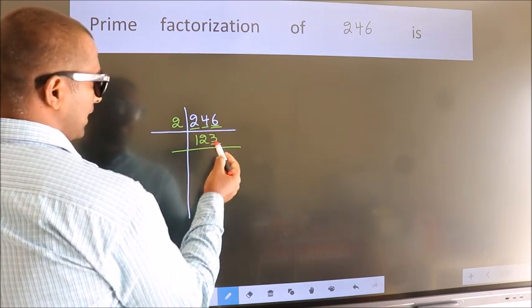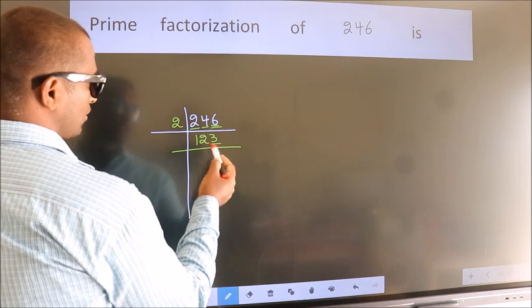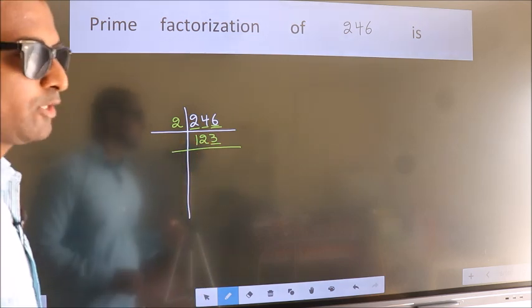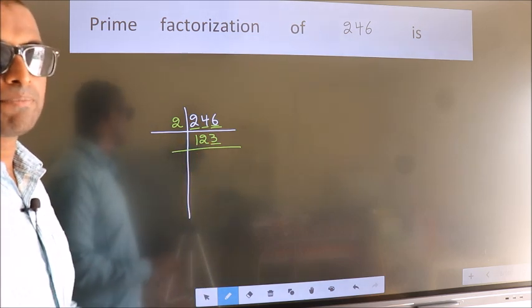Now last digit 3 is not even, so this number is not divisible by 2. Next prime number is 3.